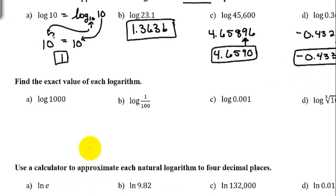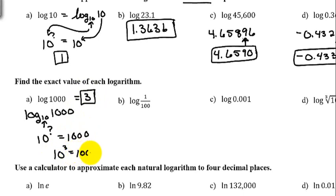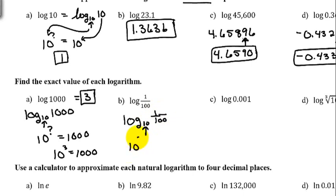In our next examples we're going to find exact values. Remember that LOG without a base means we have a base of 10. Our first example is log of 1000: what power can I raise 10 to so that I get 1000? The answer is 3, since 10 to the third equals 1000. The next one is log of 1/100, which is really log base 10 of 1/100.